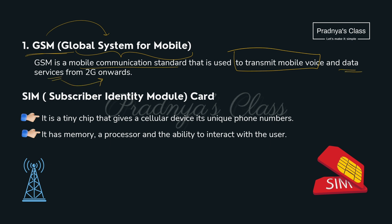For communication in mobile we use a SIM card. The full form is Subscriber Identity Module. SIM is a tiny chip with which we get one unique phone number. It has memory, a processor, and the ability to interact with the user.